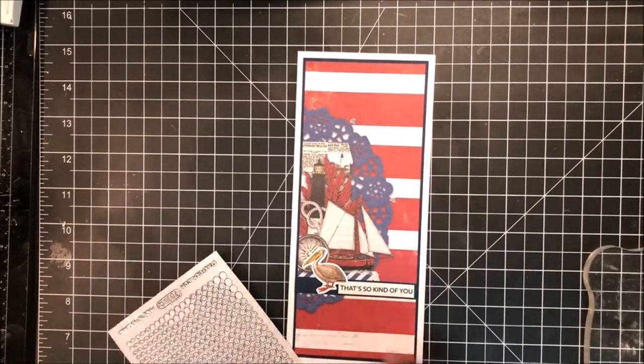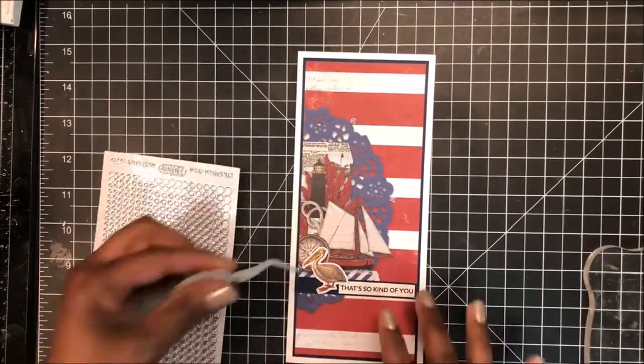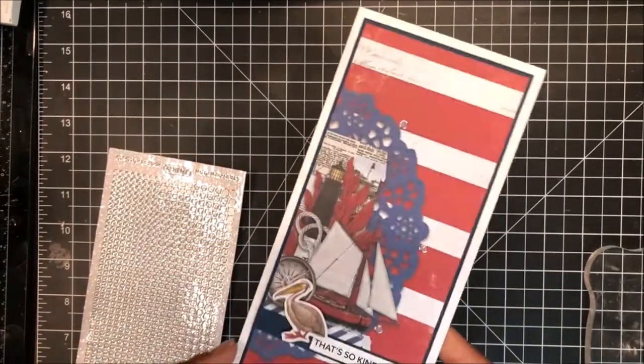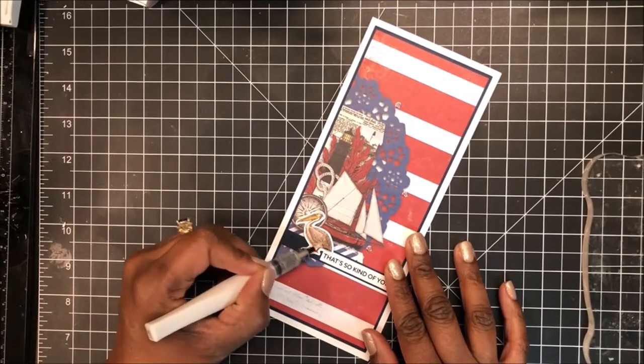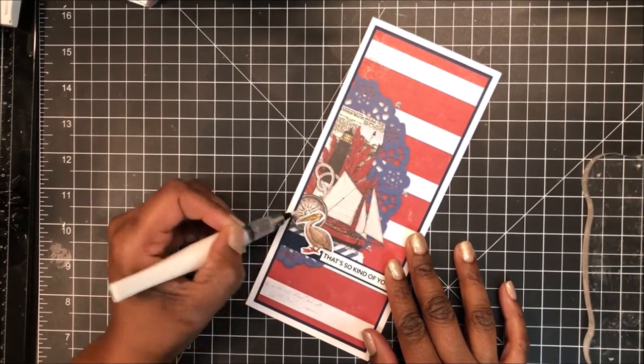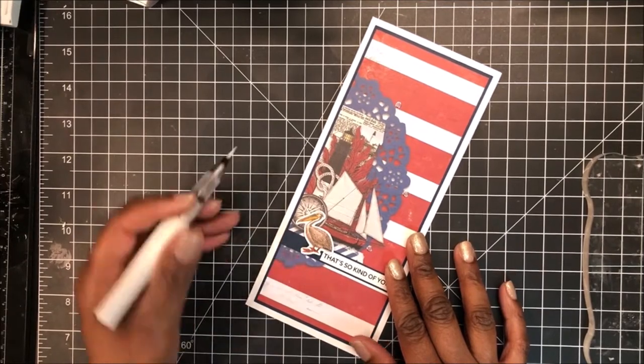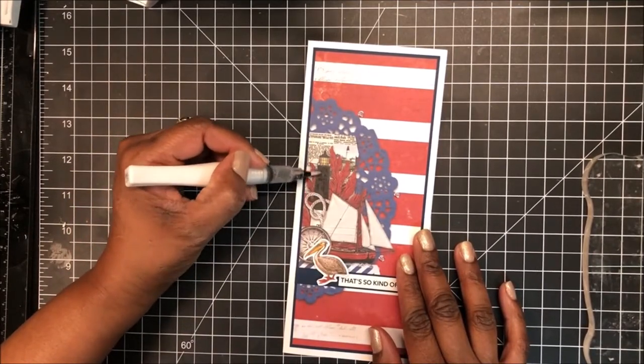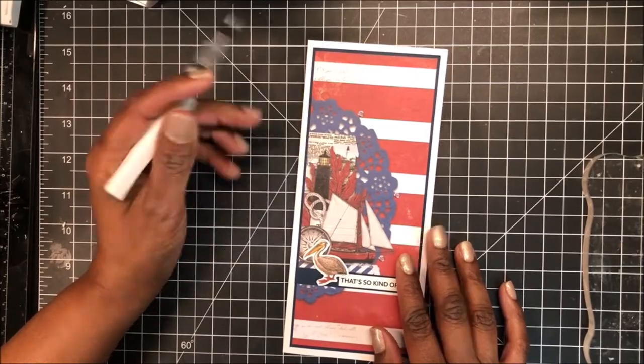Next, I will place some Elizabeth Crafts silver peel offs, three of those on this focal panel. Love the way this card turned out. And next I will bring in some Wink of Stella for and color in or add glitter, I should say to my pelican. Lovely. And adding a little bit to the lighthouse. Ooh, I love that shimmer.